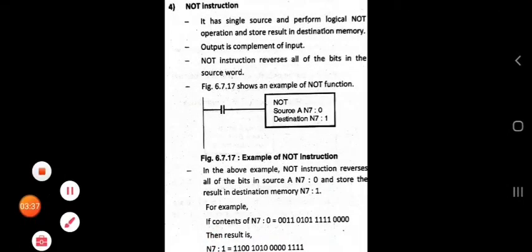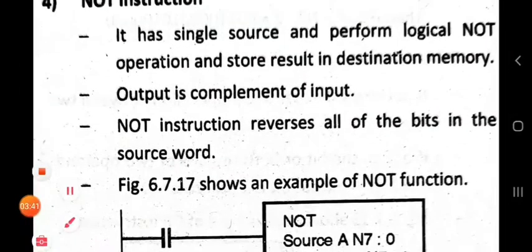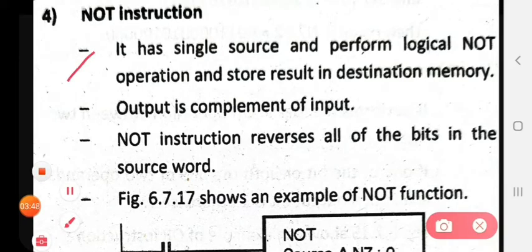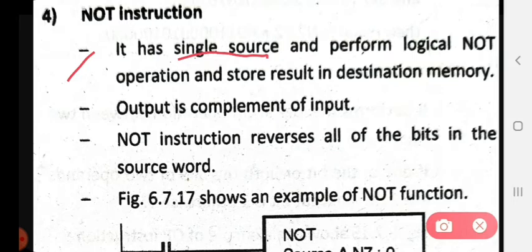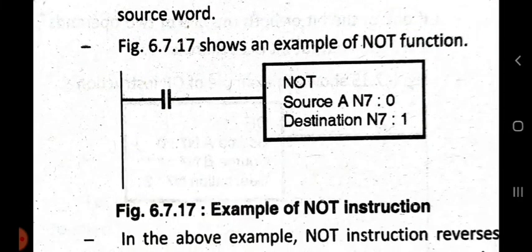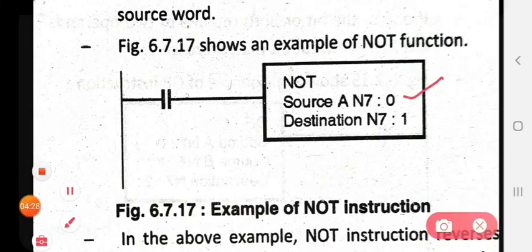Next is the NOT instruction. It has a single source and performs a logical NOT operation, storing the result in destination memory. The output is the complement of the input. The NOT instruction reverses all the bits in the source word — ones become zeros and zeros become ones. We consider source as n7s-to-zero and the result is stored in n7s-to-one.